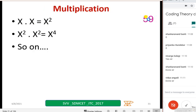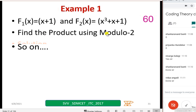X into x equal to x square, all of you know. X square into x square equal to x4. I will wait for 10 seconds. And let us take one simple example. Find out the product of these two using modulo 2. So take this example, copy down, try to do the multiplication, but use modulo 2 and write your answer in the chat box. X plus 1 into x cube plus x plus 1, you have to do it.